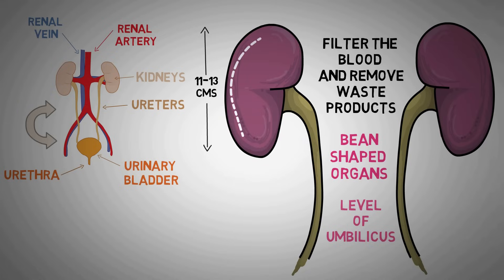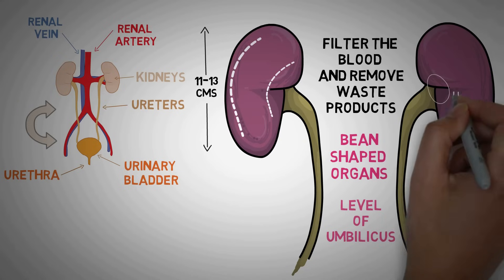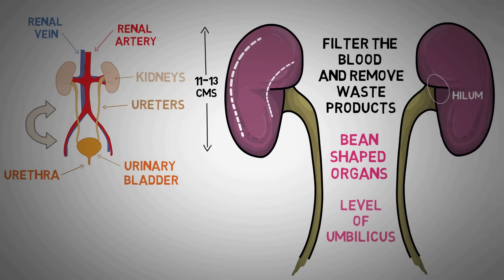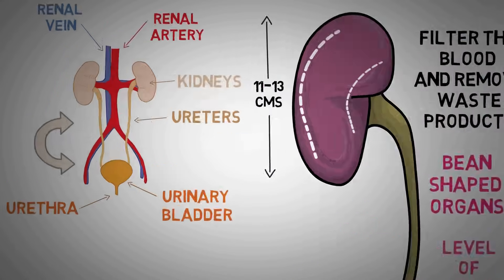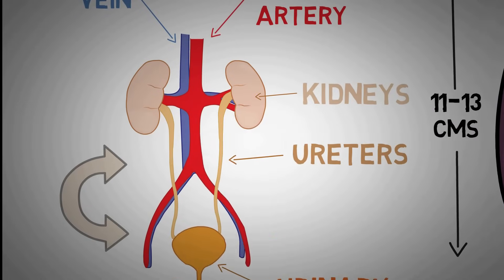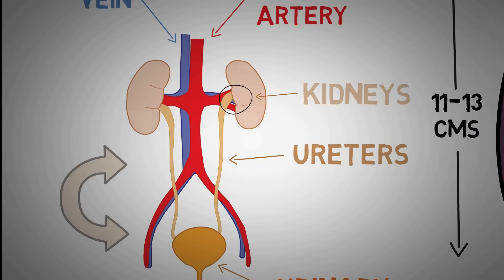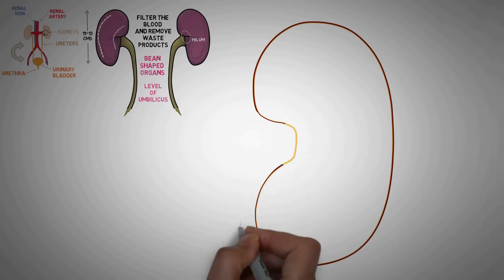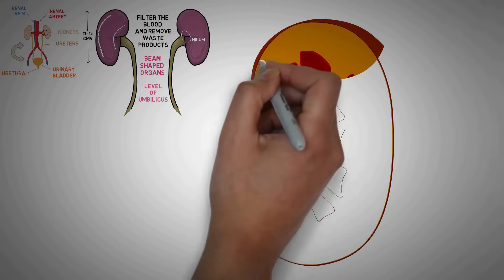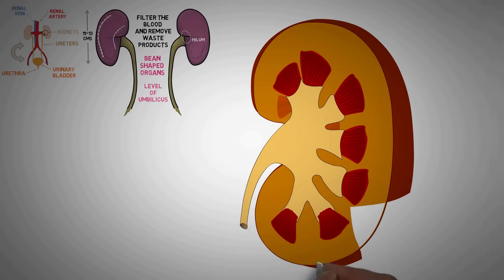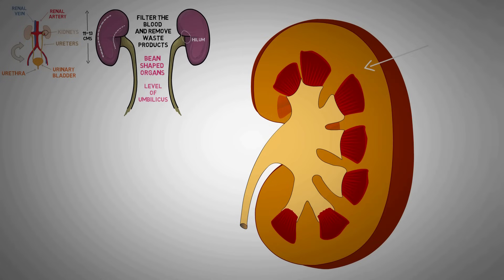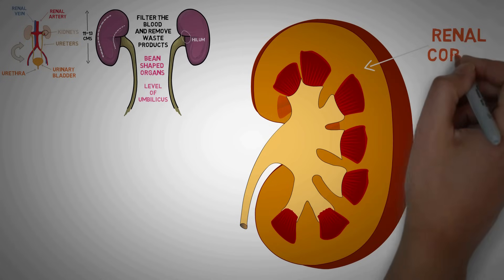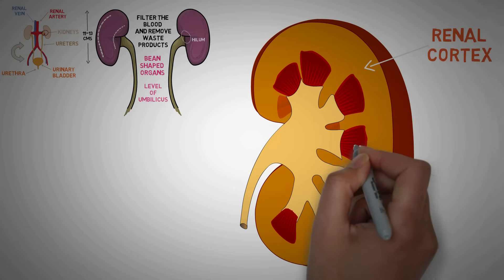This asymmetry in size and placement is due to the position of the liver on the right side of the body. Each kidney has a convex and a concave border. The concave border of the kidney has this notch-like structure known as the hilum. This is the place where the blood vessels enter and leave the kidney. Now if we slice the kidney we will be able to see the internal structure of the kidney. The internal structure of the kidney is divided into two major regions: the renal cortex and the renal medulla.